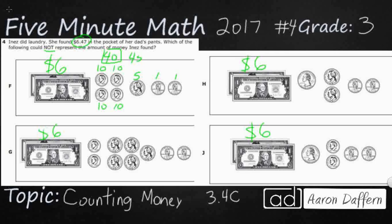45. Adding that 5. 46, 47. So it looks like I've got $6.47, so F looks good.